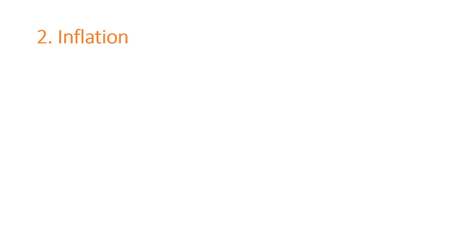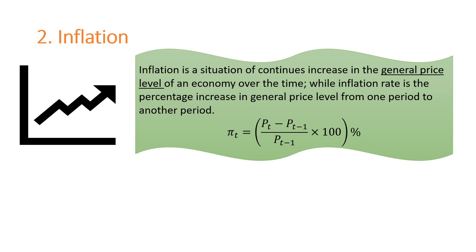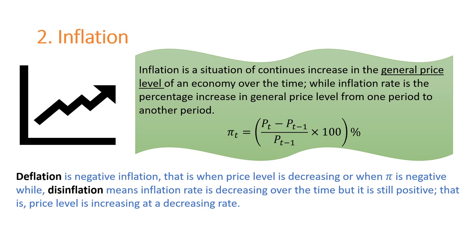The second key concept is inflation. Inflation is a situation of continuous increase in the general price level of an economy over time. The inflation rate is the percentage increase in the general price level from one period to another. Deflation is negative inflation — that is, when the overall price level is decreasing, or when inflation is negative. Disinflation means the inflation rate is decreasing over time, but it is still positive — that is, the price level is increasing at a decreasing rate.